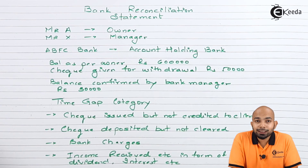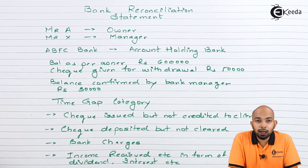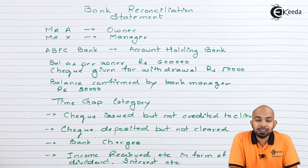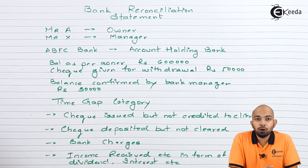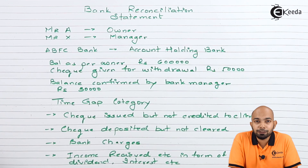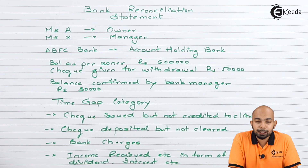So when you know there is a difference, these are the two probable causes: time gap reasons and human errors. In the next video we will be learning how to resolve these issues using a specific format, understanding certain formulas and prescriptions in order to effectively prepare the bank reconciliation statement in the most efficient way. Thank you for watching Ekeda — keep subscribing to Ekeda.